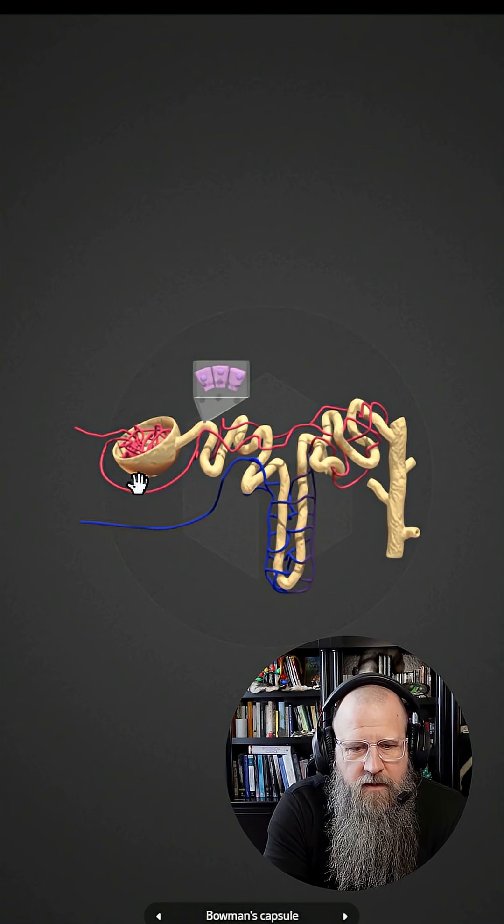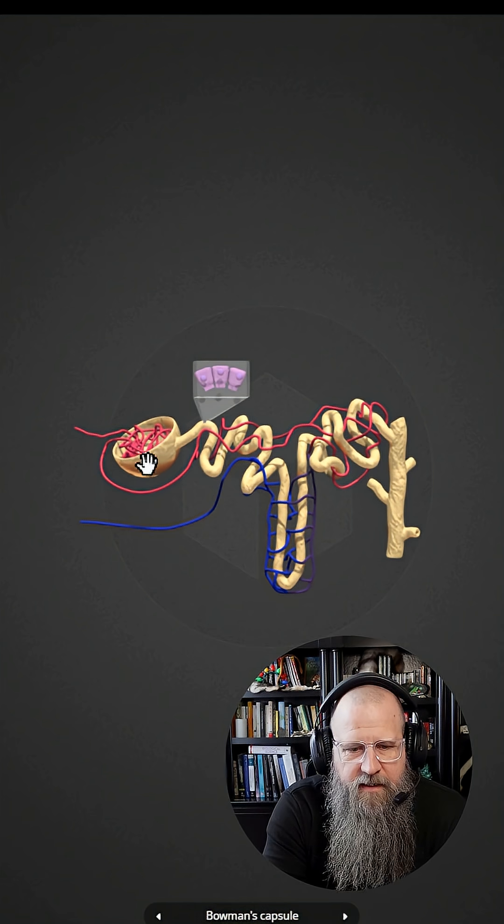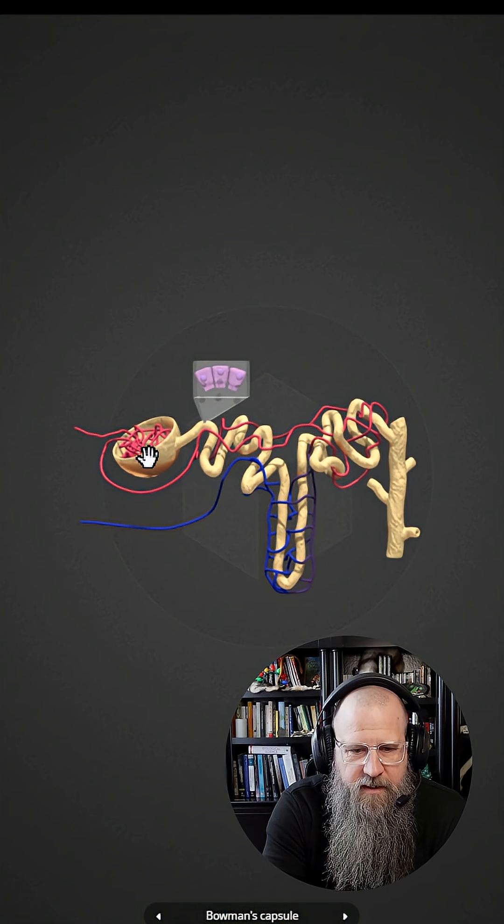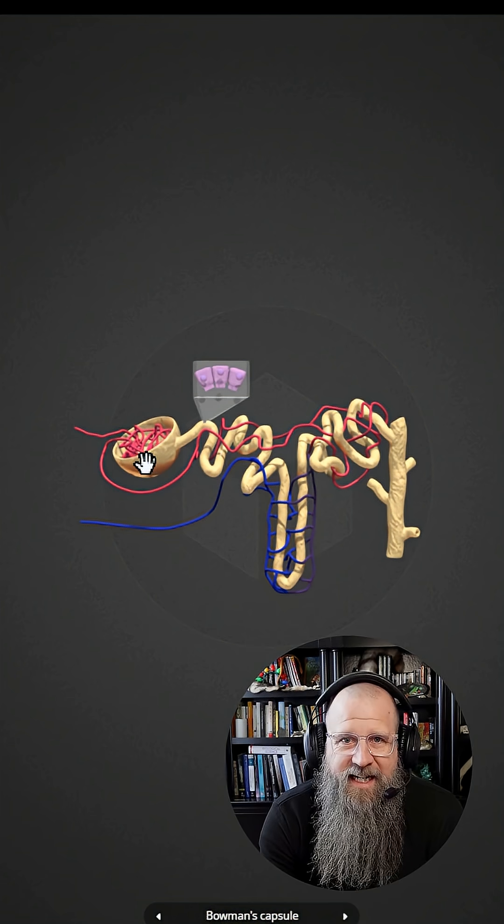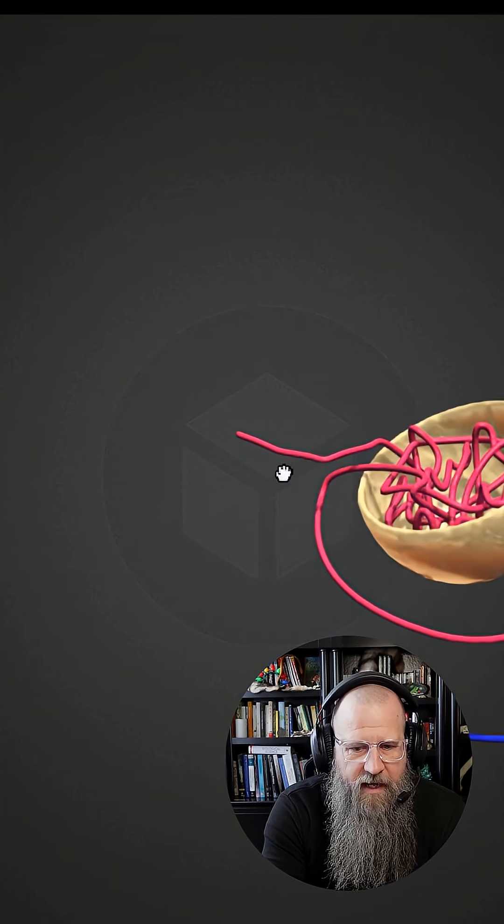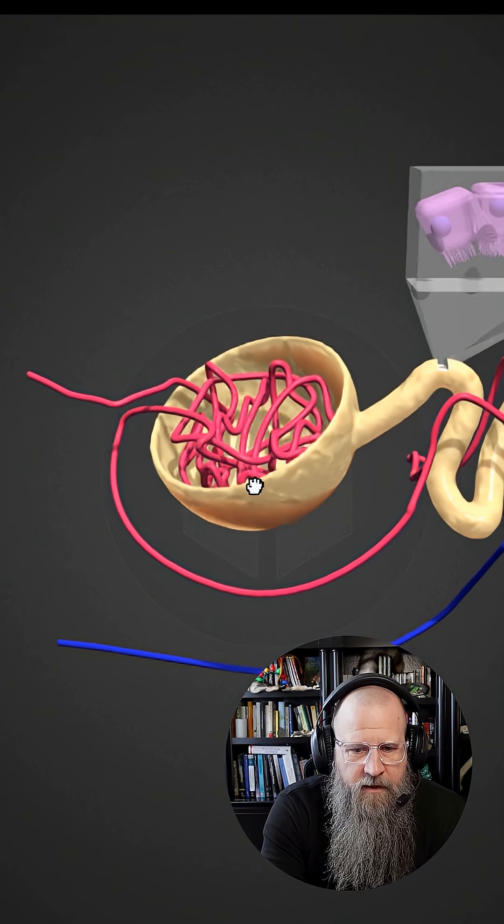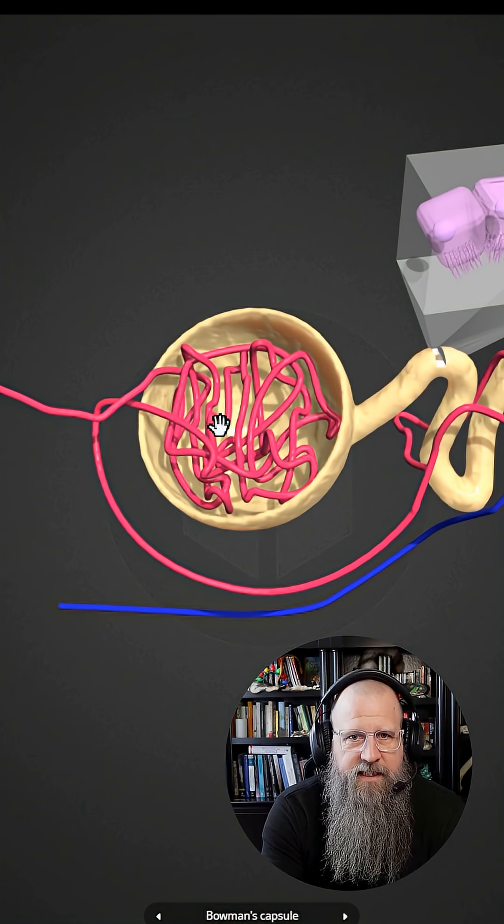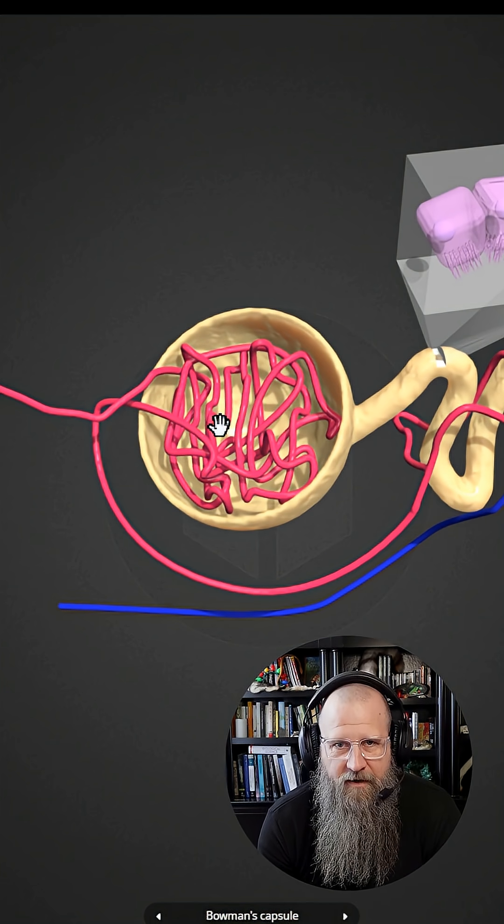If we look at the nephron, we can see that these over here are the blood vessels. This is the blood going to come into the kidney that is going to get filtered. So if we zoom in on that area over here, here are our blood vessels. That's a capillary and this is known as the glomerulus.